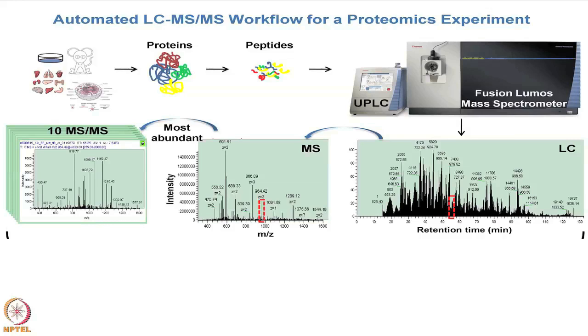In an automated setting, we are almost never going to collect one MS spectrum at a time. We will stick samples in a machine and it will keep generating mass spectra. The automated workflow starts with a source of material, which could be tissue or cell lines, and you extract that into proteins.